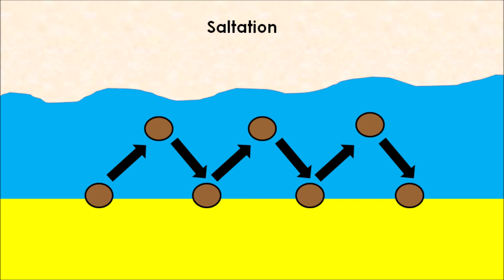We also have a transportation process known as saltation, which involves pebbles. Because pebbles are lighter than boulders, they bounce along the seabed from time to time. When the sea has enough energy it picks a pebble up from the seabed, suspends it in the water, then drops it back down when it loses energy — all related to the weight of the sediment.